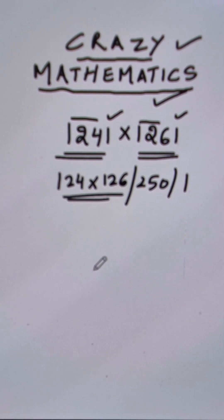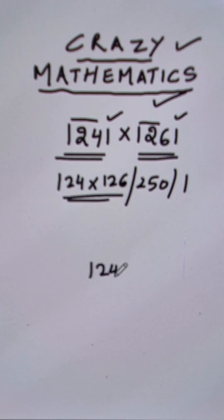Now how do you find this product? For this, let's observe that 124 and 126, the sum of the unit digits is 10.